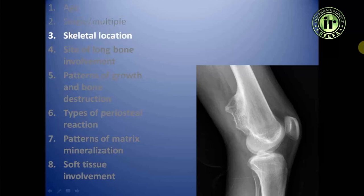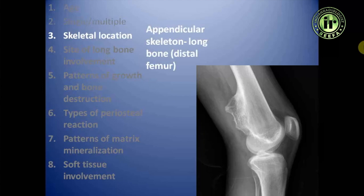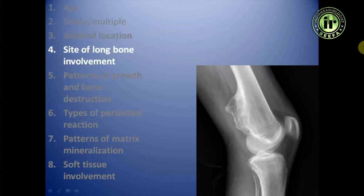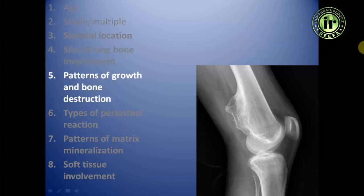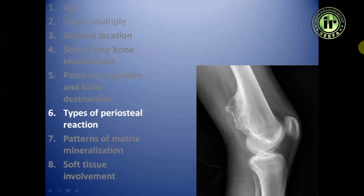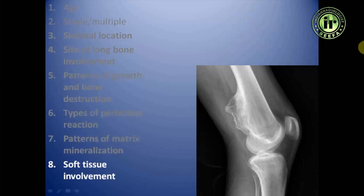Skeletal location: the lesion is involving the appendicular skeleton and is involving a long bone, specifically the distal femur. Site of long bone involvement: the lesion is involving the metaphysis of the distal femur, and the lesion is pointing away from the joint. Pattern of growth and bone destruction: the lesion is basically a bony outgrowth with no obvious destruction, and no obvious periosteal reaction.